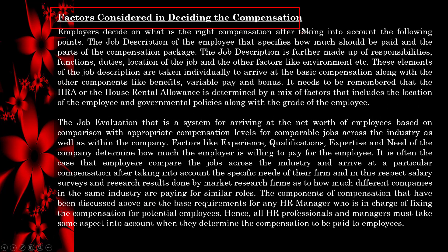What are the factors considered in deciding compensation? Employers decide on the right compensation by taking into account specific points, including the job description of employees that specifies how much should be paid and the parts of the compensation package. The job description is made up of responsibilities, functions, duties, location of the job, and environmental factors. These elements are taken individually to arrive at the basic compensation along with other components like benefits, variable pay, and bonus. House rental allowance is determined by factors including the location of the employee, governmental policies, and the grade of the employee.